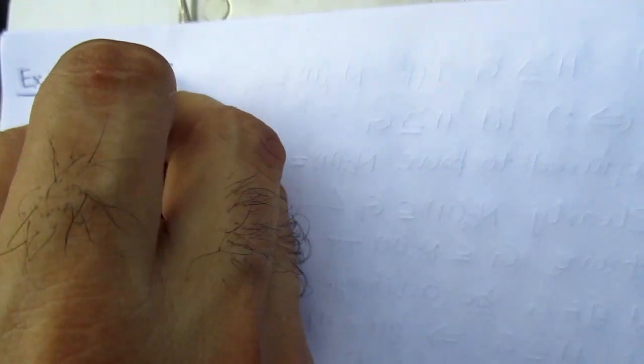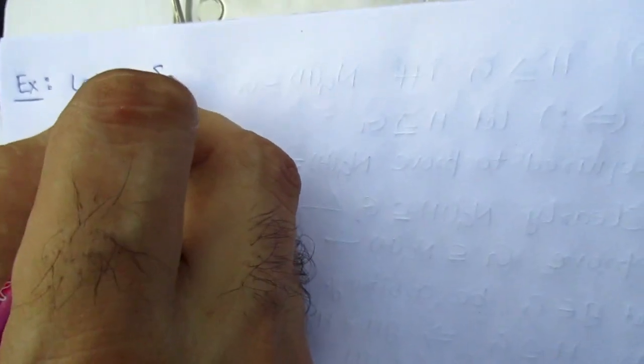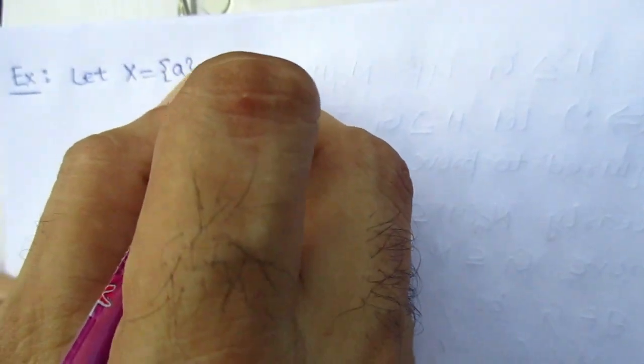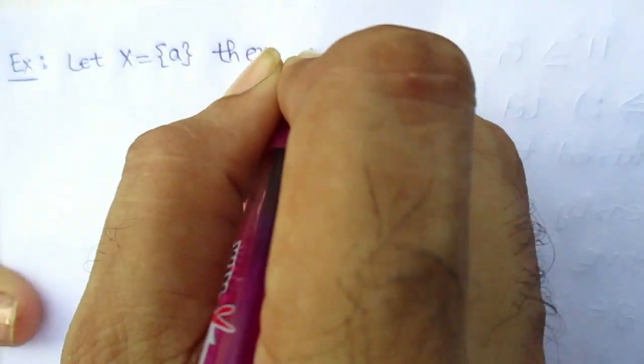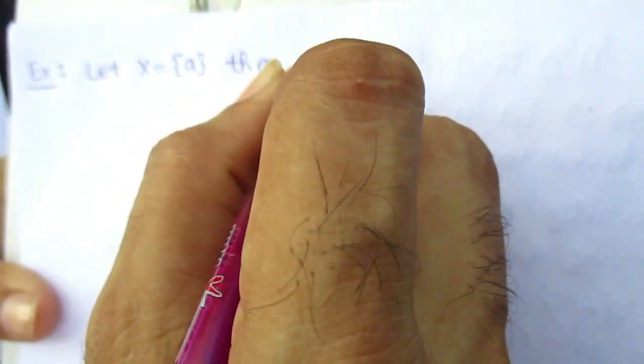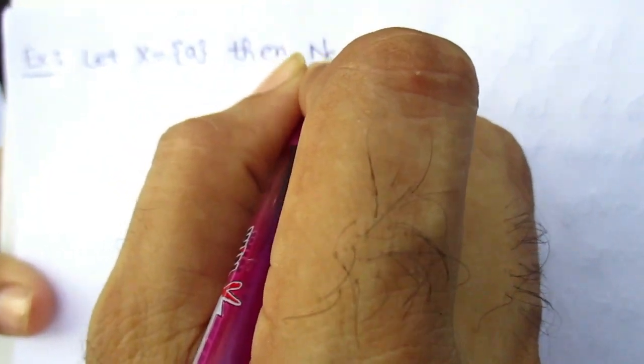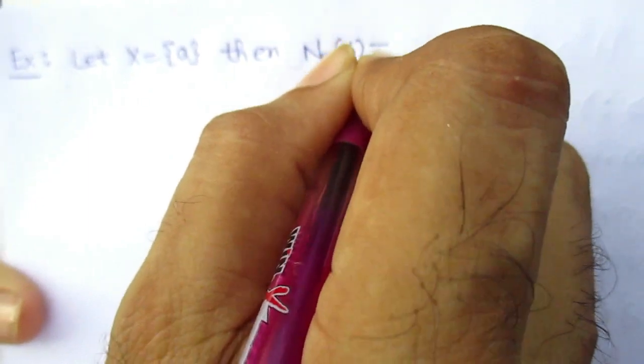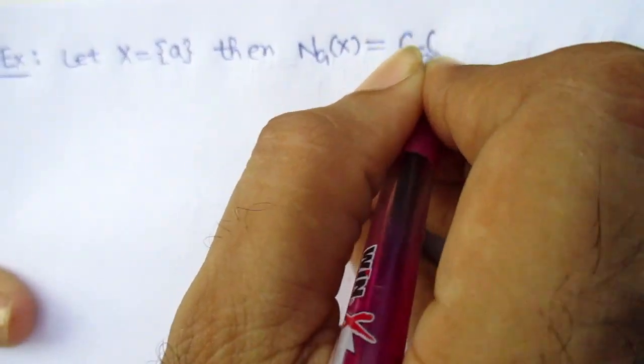Here is an example. Let X be equal to the singleton set {a}. Then N_G(X) is equal to C_G(X).